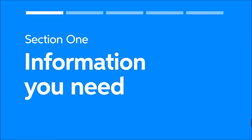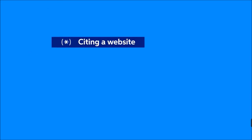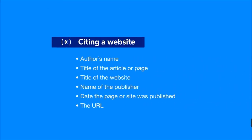Hi, I'm Matt. In this video, we will look at how to create an MLA citation for websites. To create an MLA citation for a website, you will need the following pieces of information: the author's first and last name, the title of the article or page, the title of the website, the name of the publisher if it differs from the name of the website, the date the page or site was published if it's available, and the URL.